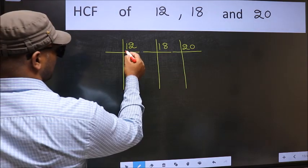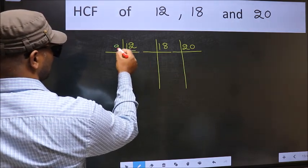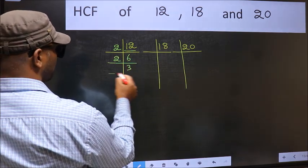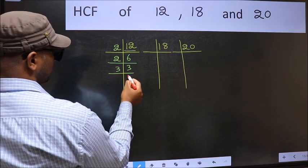Here we have 12. 12 is 2, 6, 12. Now 6 is 2, 3, 6. Now 3 is a prime number so 3 once is 3.